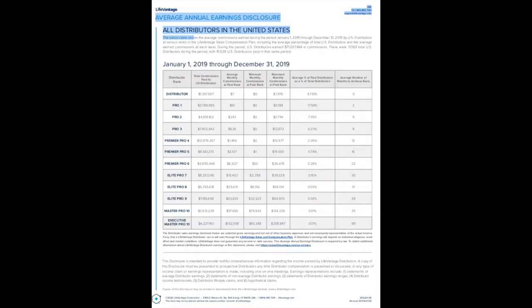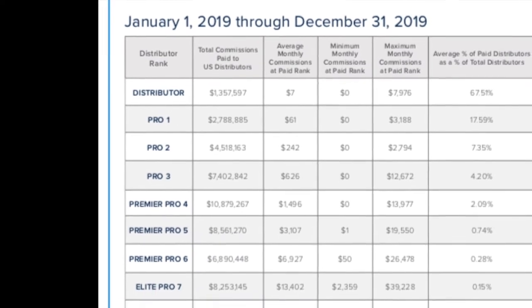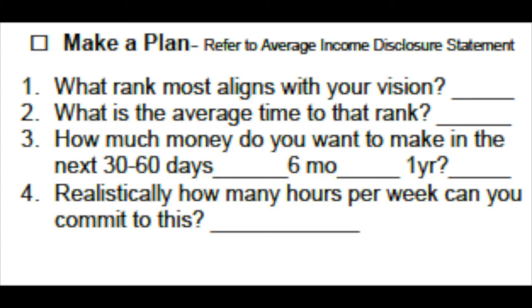Next, make a plan. Look at the income disclosure statement, see all of the ranks and rank advancements, and look at the average monthly income. Answer these questions: What rank most aligns with your vision? What's the average time it takes to hit that rank? How much income do you want to create on a monthly basis in the next 30 to 60 days, in the next six months, in the next year? Write those numbers down. And importantly, realistically — time-wise — how many hours per week are you going to invest in your business to create these results?